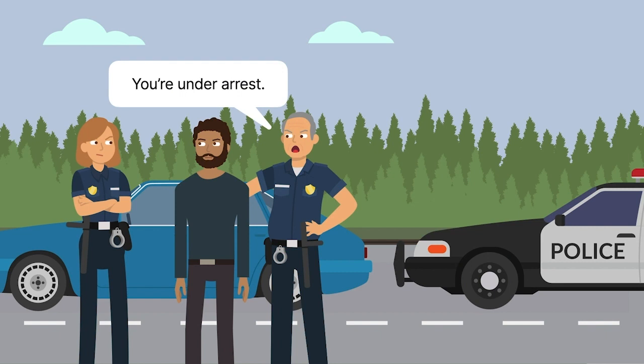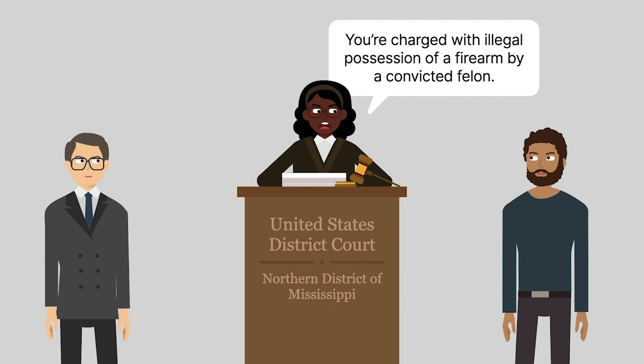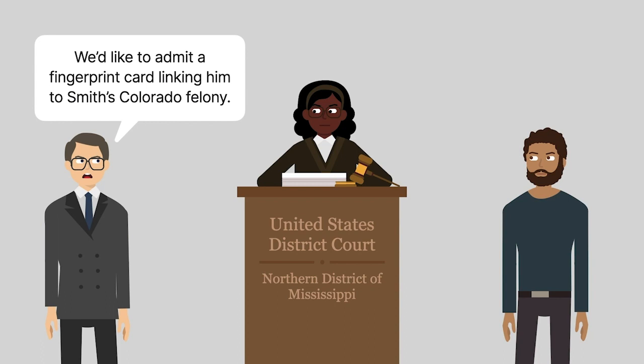Dawkins was charged in district court on multiple charges, including illegal possession of a firearm by a convicted felon. During the trial, the prosecution attempted to link Dawkins to Smith's Colorado felony using a fingerprint card that purportedly came from the Denver Police Department and included Smith's signature.